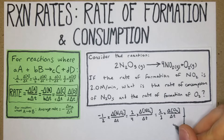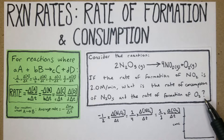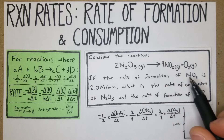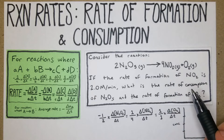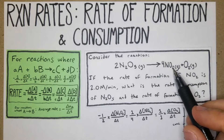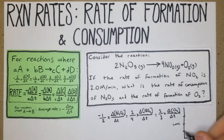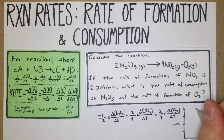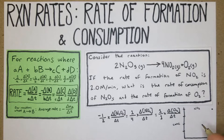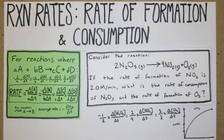On this graph we have concentration on the Y-axis and time on the X-axis. We have three species. NO₂ has four moles, so it will have the most concentration, and because it's a product we assume we start with none — so we draw that rising curve for NO₂.